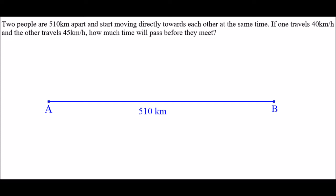So a little diagram here. There's two people, called them A and B. They're 510 kilometers apart, and then they start moving toward each other, one of them at a speed of 40 kilometers per hour and the other at a speed of 45 kilometers per hour. And at some point they will meet.